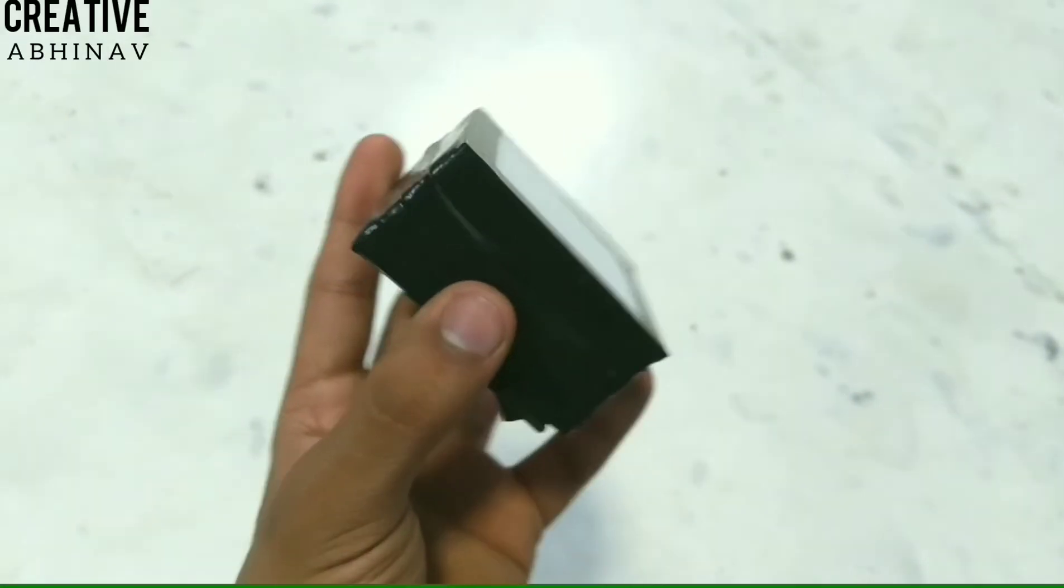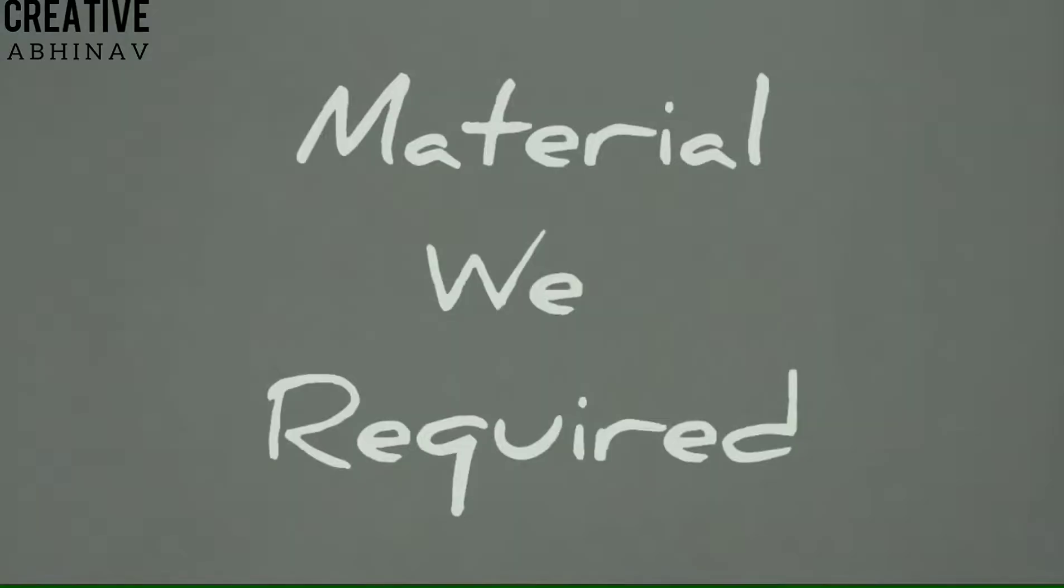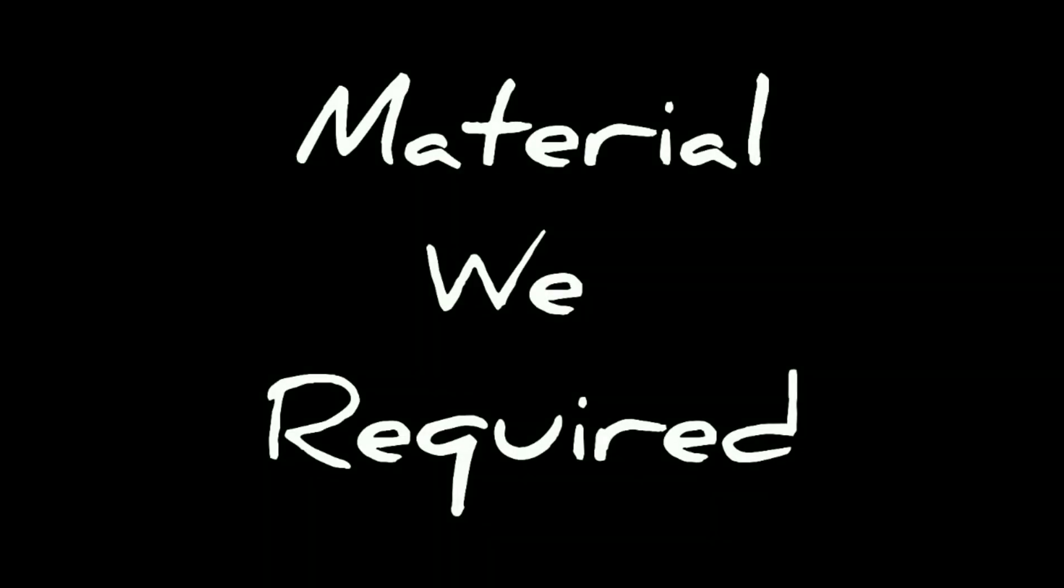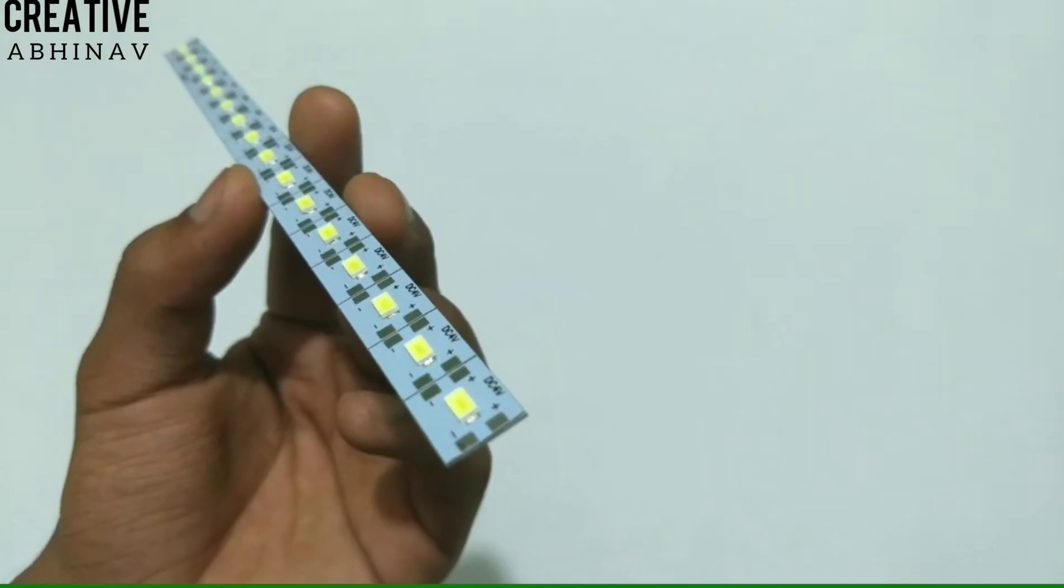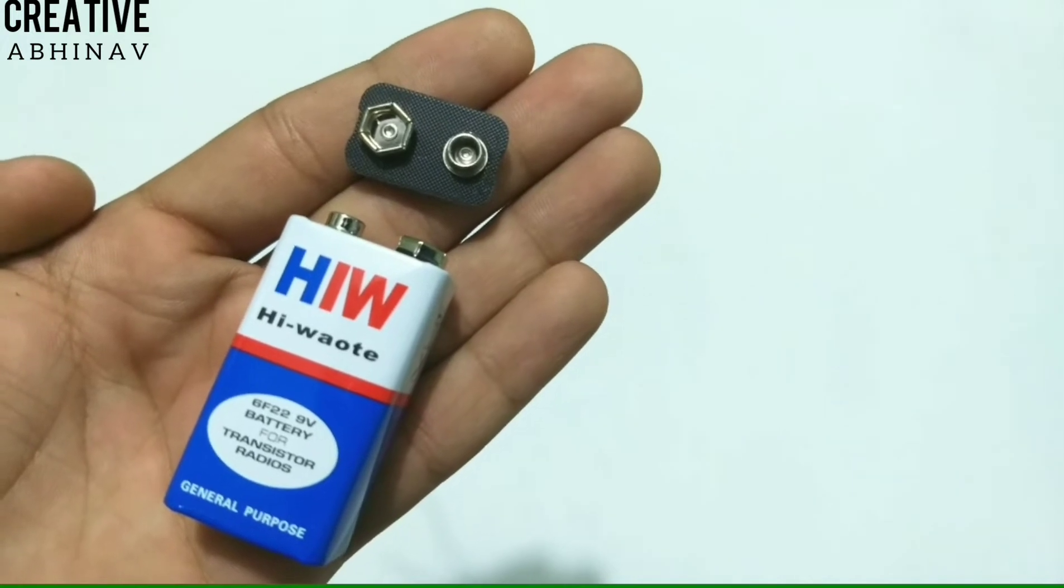Hey guys, this is Abhinav Bhatt here and you're watching Creator Abhinav. Today in this video I'm gonna show you how to make an emergency LED box. Without wasting any further time, let's get started. Materials we require: a LED strip, acrylic sheet, a 9-volt battery, and a battery connector.